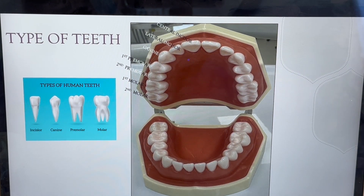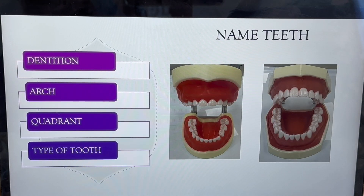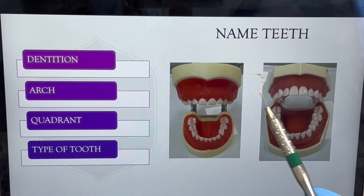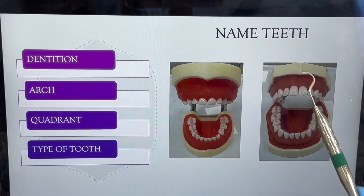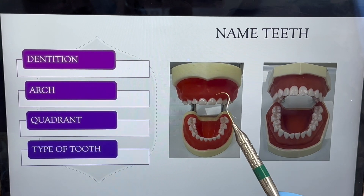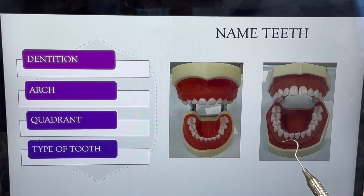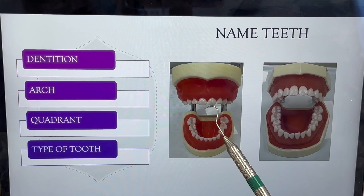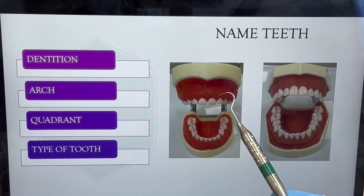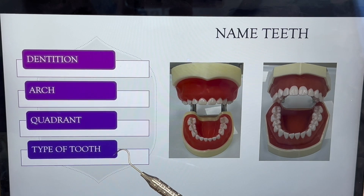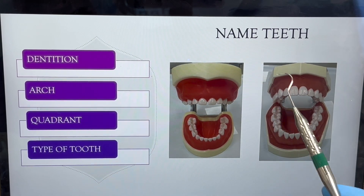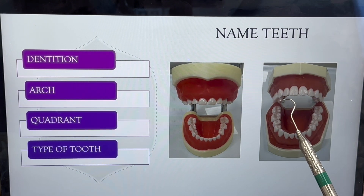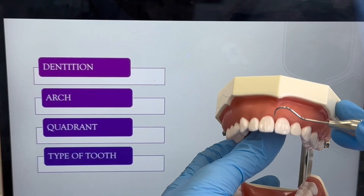These are the types of teeth. Review: central incisor, lateral incisor, canine, first premolar, second premolar, first molar, second molar, and of course the third molar — though we don't see it in this typodont. Are you ready to name teeth? First we need the dentition — primary or permanent. Then the arch — maxillary or mandibular. Then the quadrant — patient's right or left. Then the type of tooth — incisor, canine, premolar, or molar.